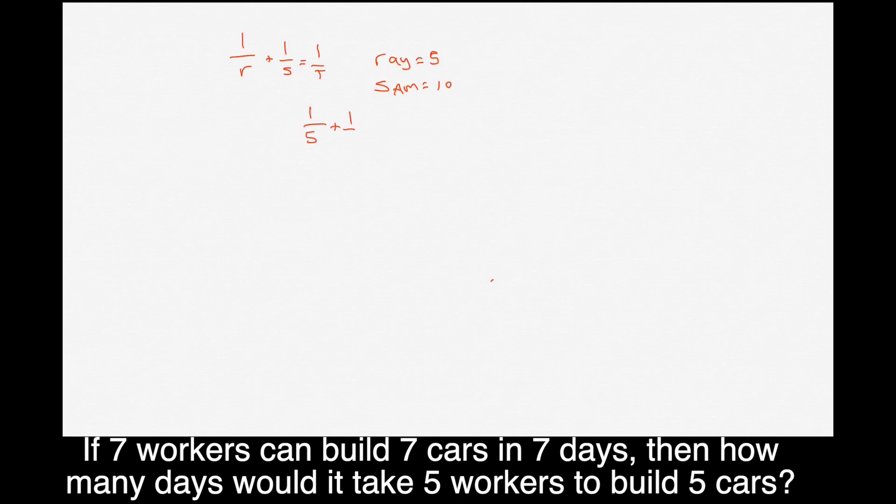It would be 1 over 5 plus 1 over 10 equals 1 over T. Just imagine the T is the time and this is one person, this is the second person. If there's a third person, let's say like Alex takes 2 days for example, then we would add him. If it says Mark takes 15 days, we could add him. So we could go on forever that way.